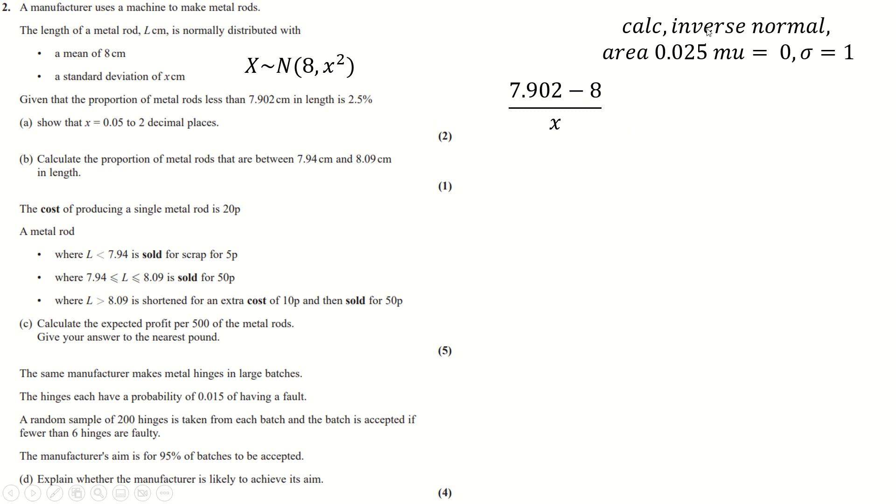So x minus mean divided by this thing that we don't know. And what does that equal? Well, it equals the chance of being under 2.5% in a standard normal distribution. So if you do calc, inverse normal, area 0.025, which is this here, and then mu equals 0, standard deviation is 1. You end up with this.